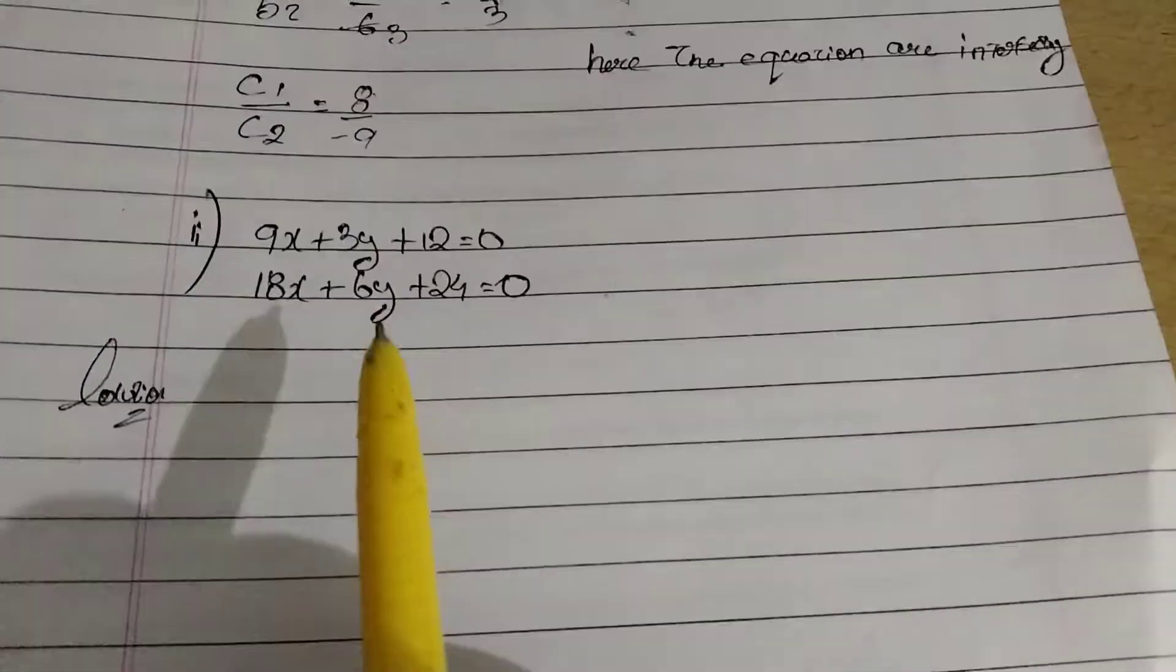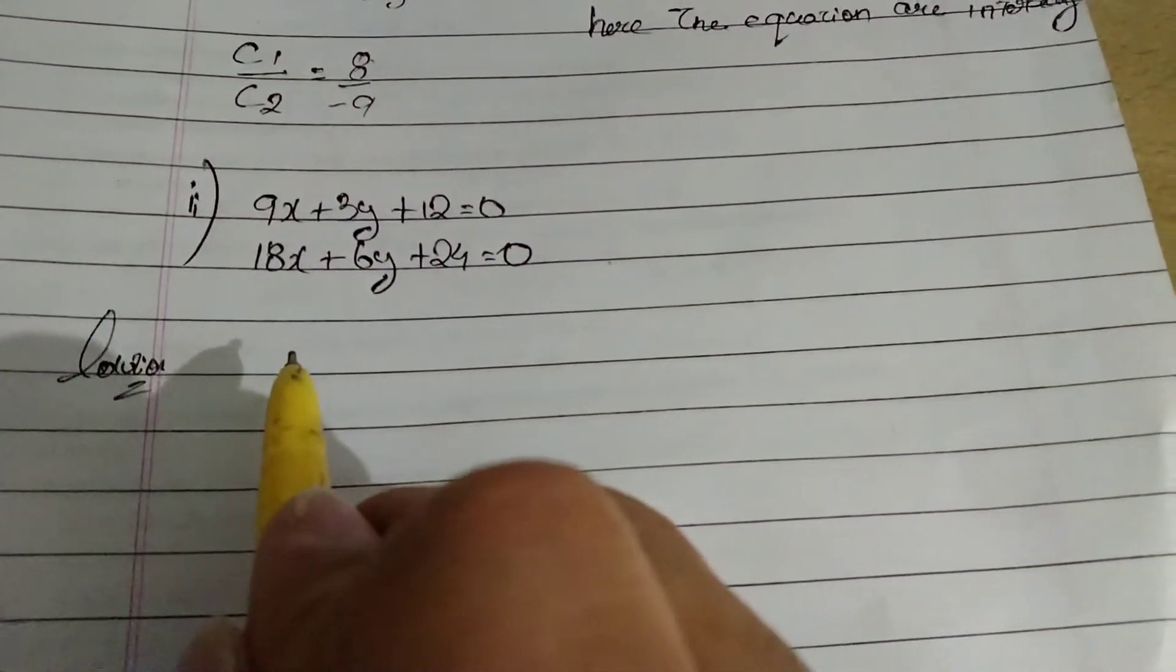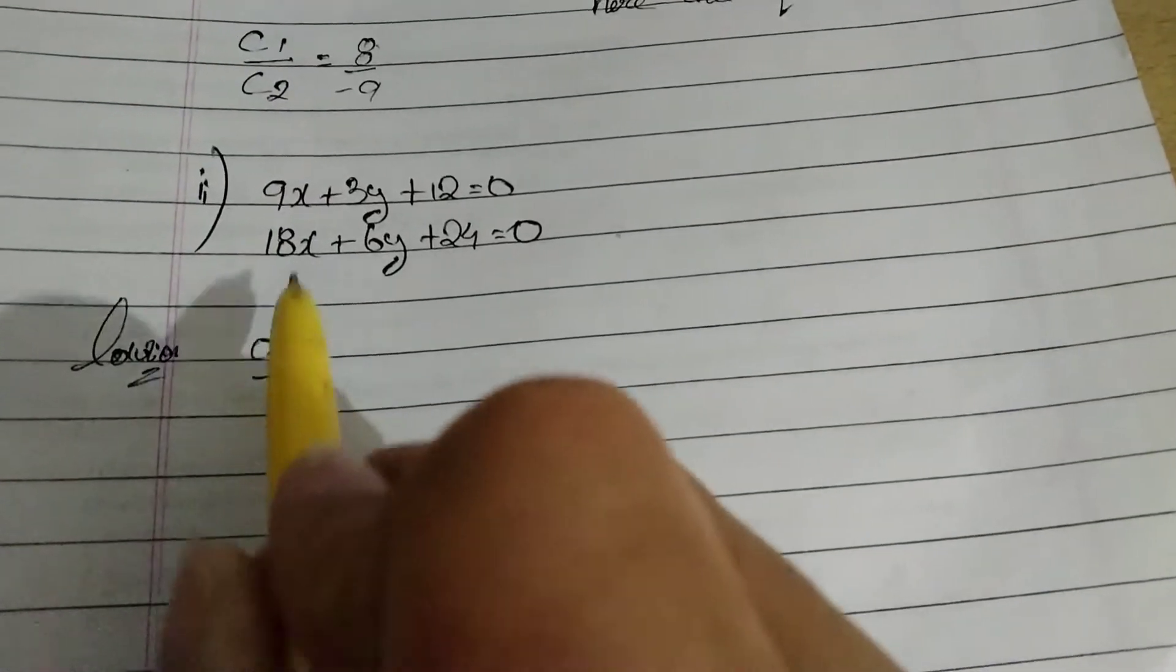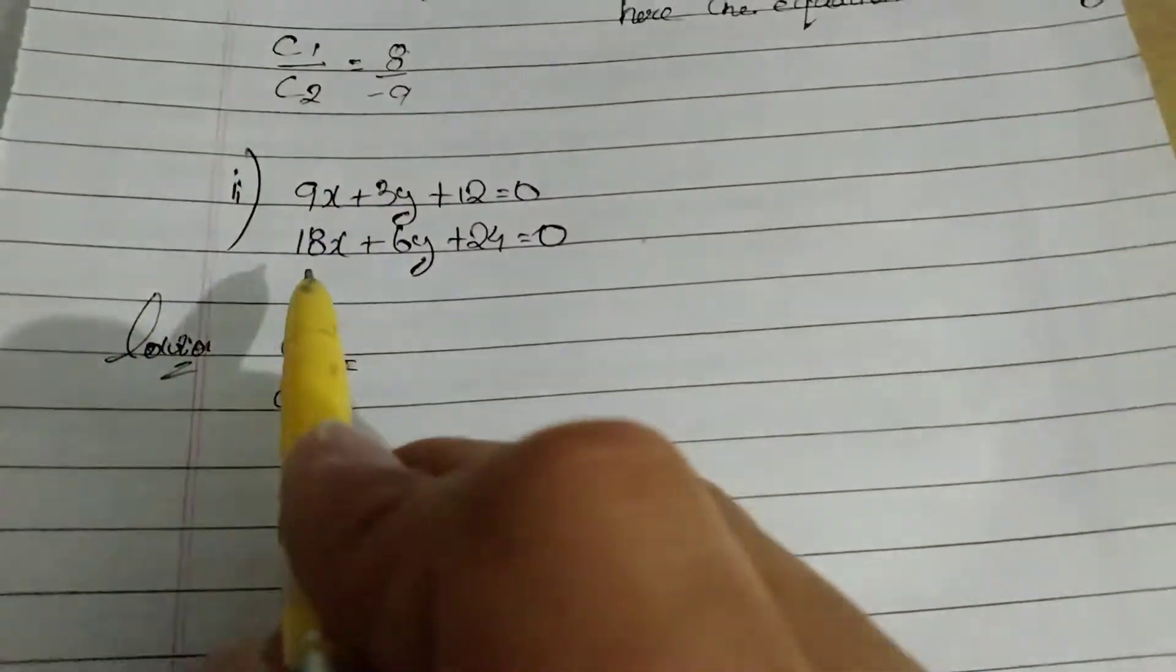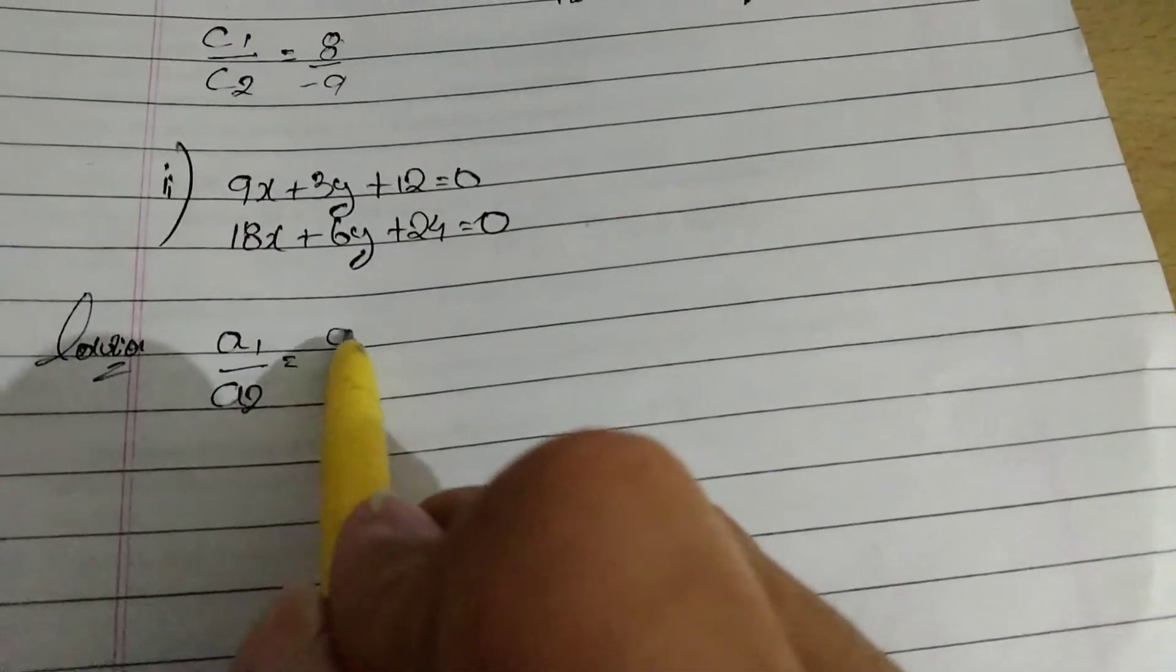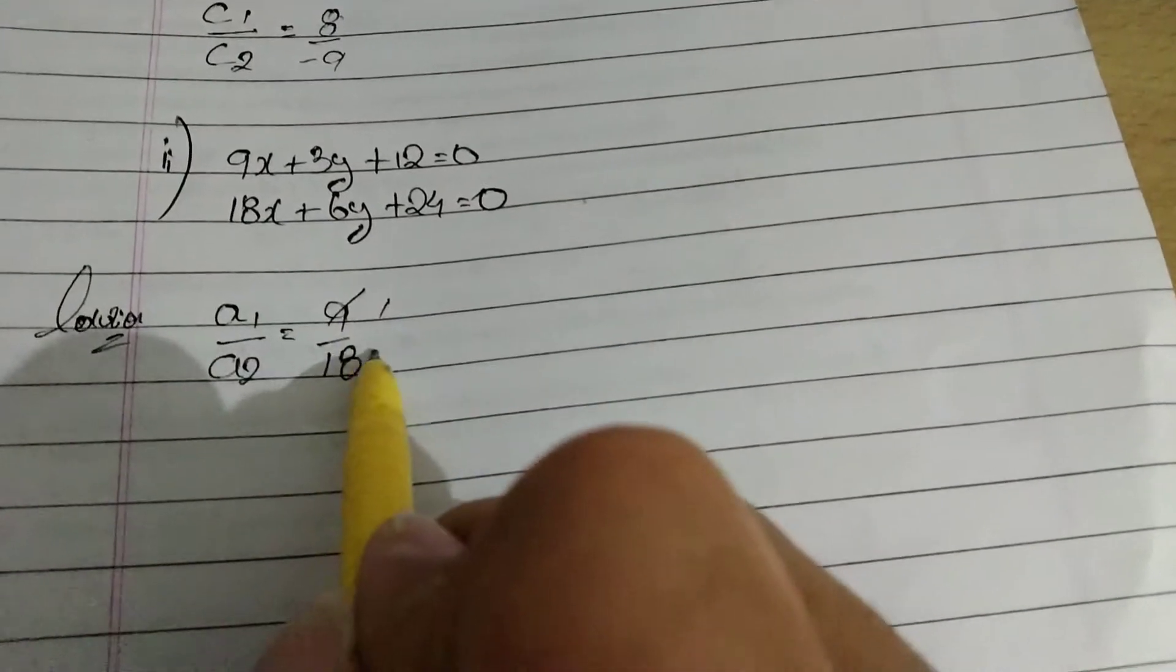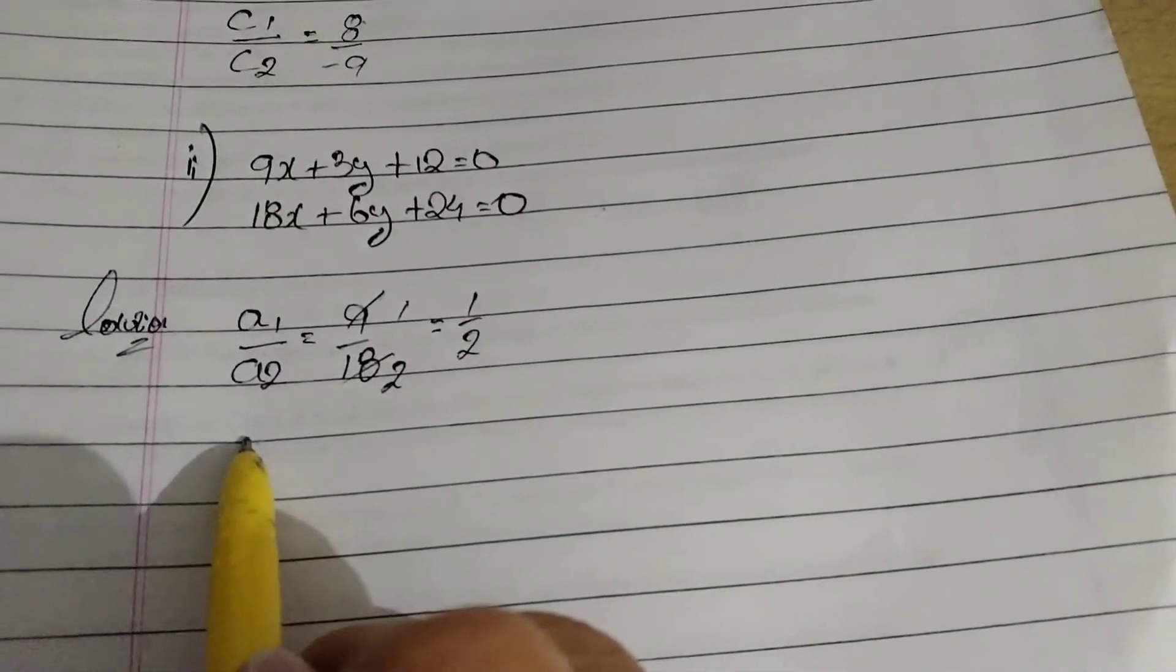Let's do number 2. I have written down the equations. We will do it a similar way. So A1 here and A2. We have 9 and 18. We can cut this. 9 on the 9, 9 to the 18. So we have 1 by 2.